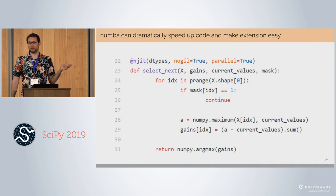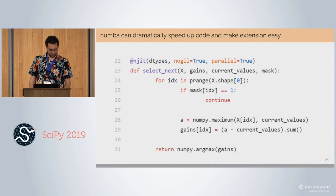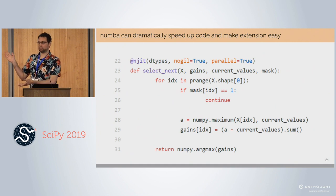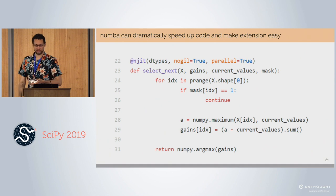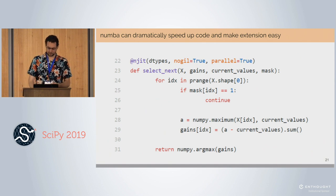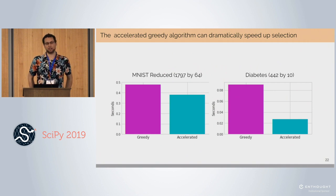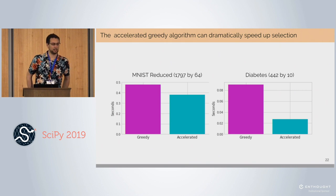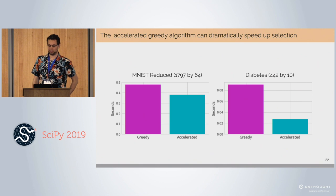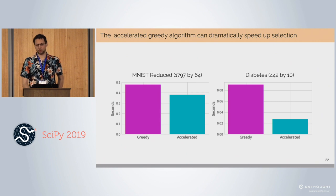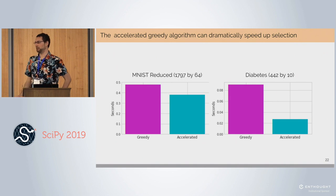We also use Numba to speed up the numerics — you can write Python code and it speeds things up a lot. We also use the accelerated greedy algorithm, also called the lazy greedy algorithm, which uses a priority queue and gives the exact same result but significantly faster. It can make the runtime linear with the size of the dataset instead of quadratic.